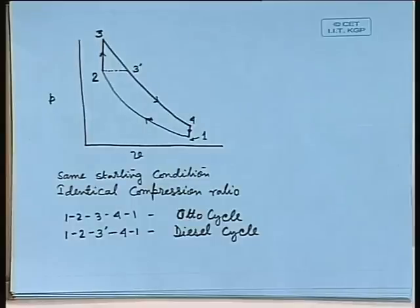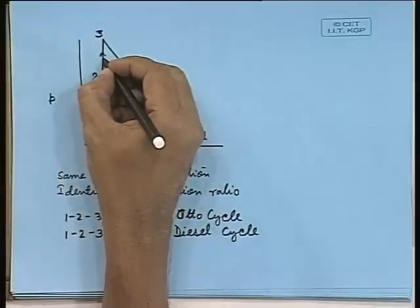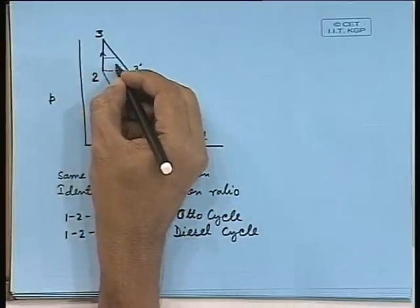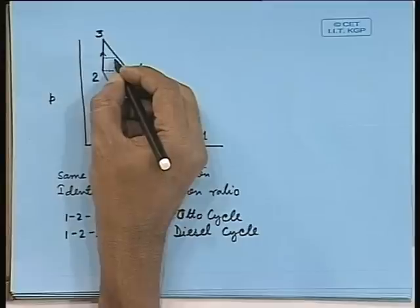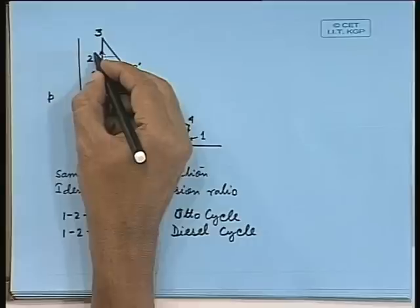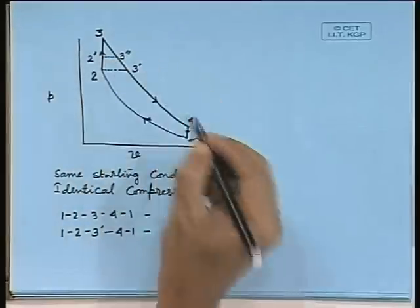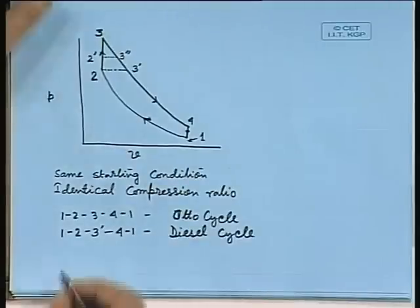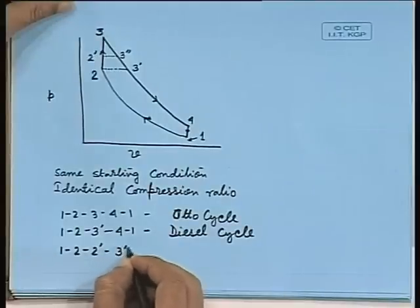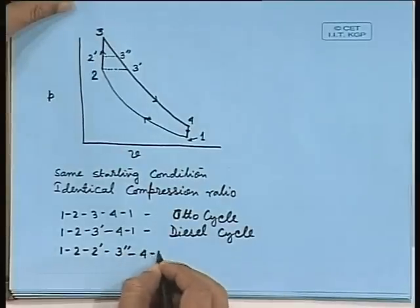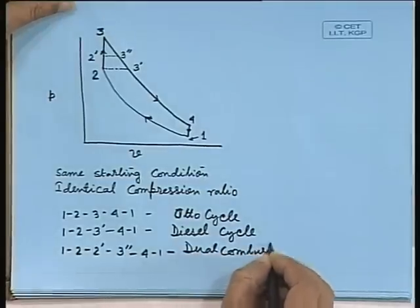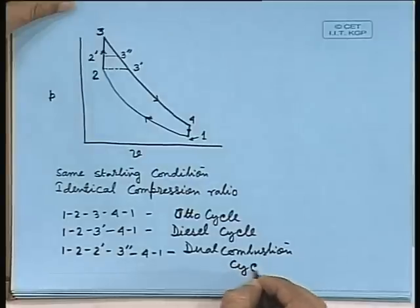If we have a dual combustion cycle, we have to go up to a certain point along the constant volume line, and then there will be a constant pressure heat addition also, so we will come somewhere here. So we will have 1, 2, 2-prime, 3-double-prime, 4, 1 — this is the dual combustion cycle.